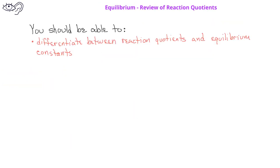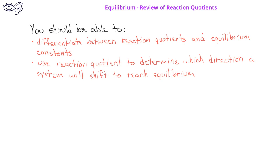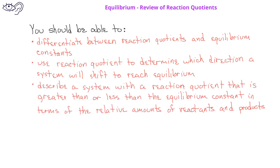By now, you should be able to describe the differences between an equilibrium constant and a reaction quotient, specifically in terms of what kinds of concentrations or pressures are used to determine either one. You should also be able to use the reaction quotient to determine which direction a system will shift to reach equilibrium, and describe a system with a reaction quotient either greater than or less than the equilibrium constant in terms of the relative amounts of reactants and products compared to the equilibrium amounts.